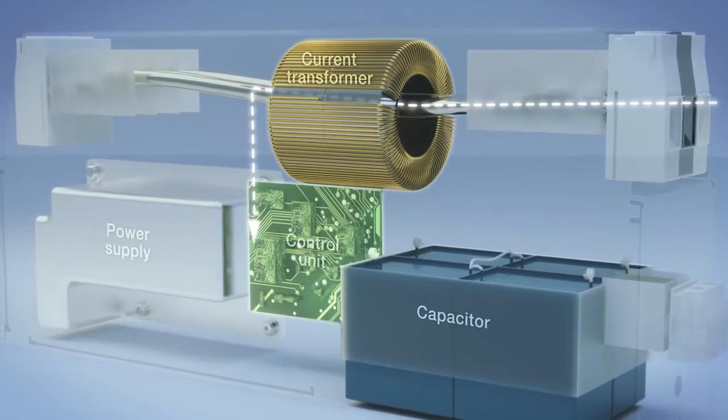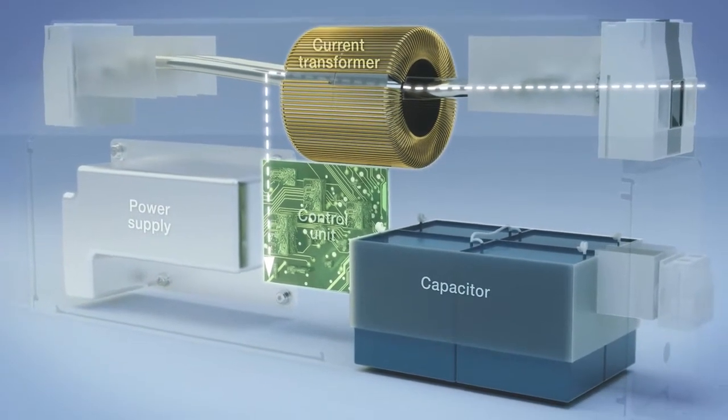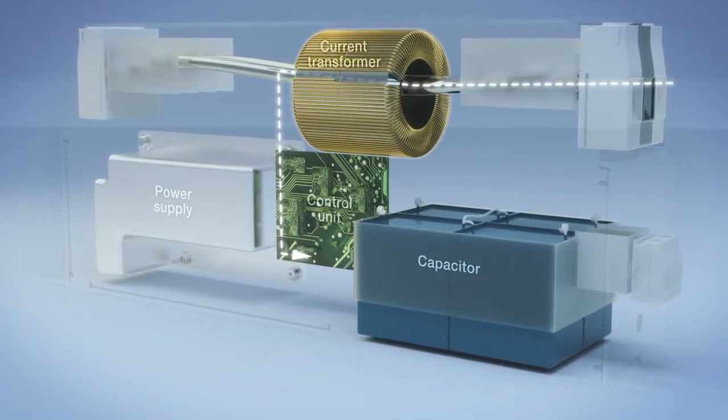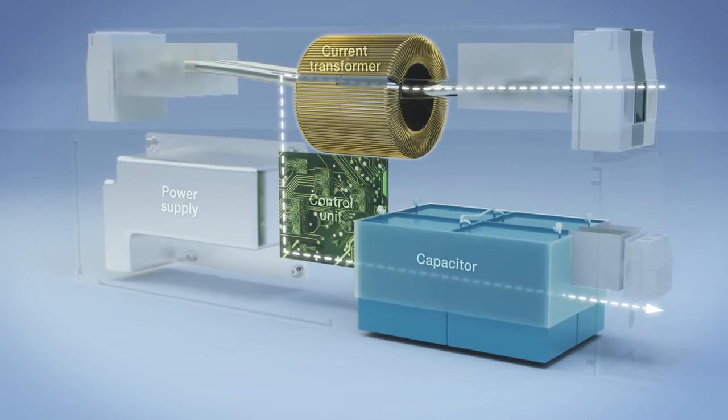Then, electronics generate a 180 degree phase shifted current with the same amplitude. This current is applied to each phase by capacitive coupling.